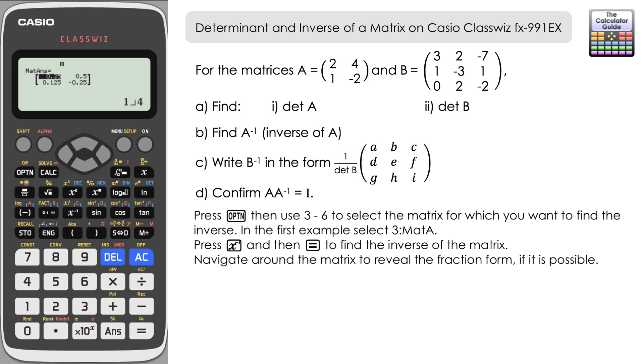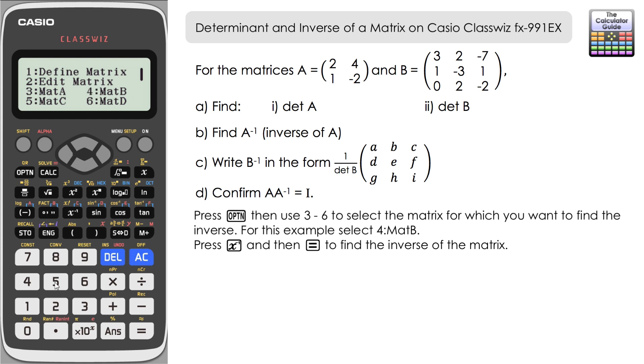You can use the decimal as well but the fraction might be the slightly better option. There is a second way of being able to display an inverse matrix and we're going to have a look at that for part c where we're looking at the inverse of B. So let's do that now. Option, matrix B is 4, and then power minus 1.